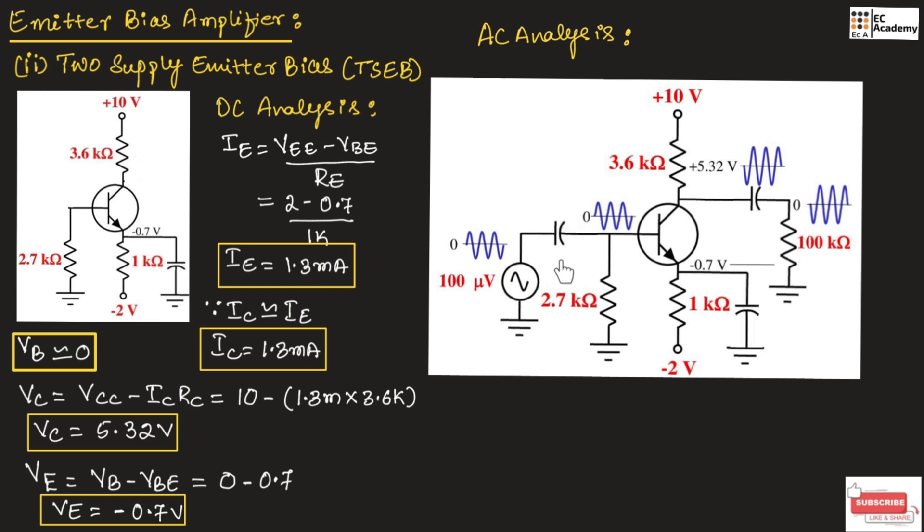The capacitors connected at the input and output side are known as coupling capacitors, and the capacitor parallel to emitter resistor is bypass capacitor. The coupling capacitor will allow only the AC signal inside the device and outside the device. This coupling capacitor also blocks the DC signal so that it can maintain the biasing condition of the amplifier circuit.